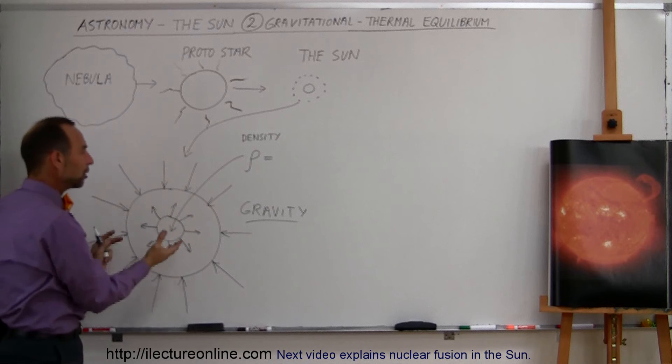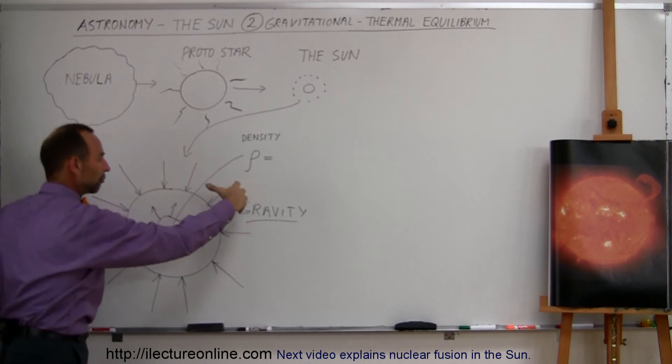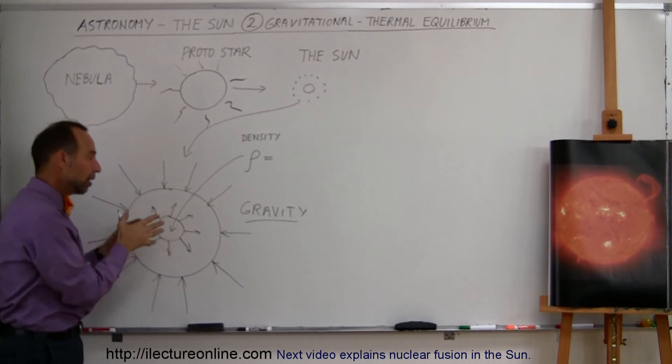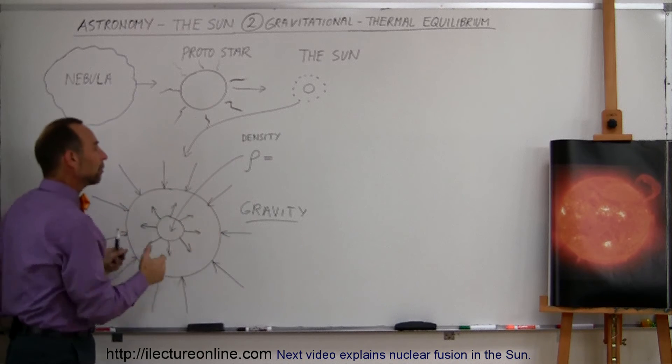So the size of the star is really determined by this equilibrium between the gravitational forces trying to make it ever smaller, and the pushback of the radiation pushing back and finding that equilibrium point between them.